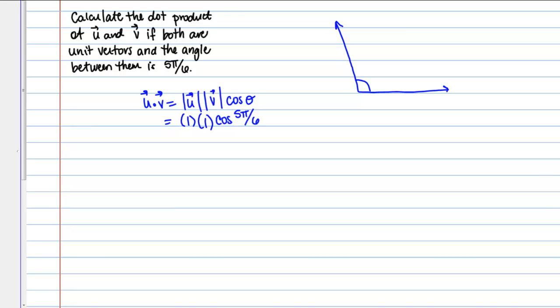What's the cosine of 5π over 6? That value if you recall is negative root 3 over 2. That's our dot product in this case.